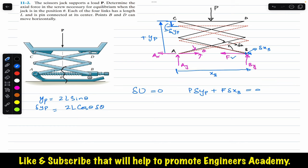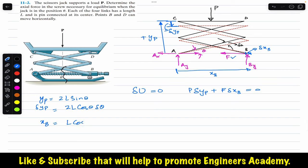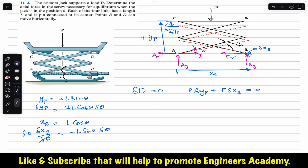Similarly for x_B: considering the right-angle triangle, x_B is the cosine component of link L, so x_B equals L cosine theta. Taking the derivative of x_B with respect to theta gives minus L sine theta. Multiplying both sides by delta theta: delta x_B equals minus L sine theta times delta theta.